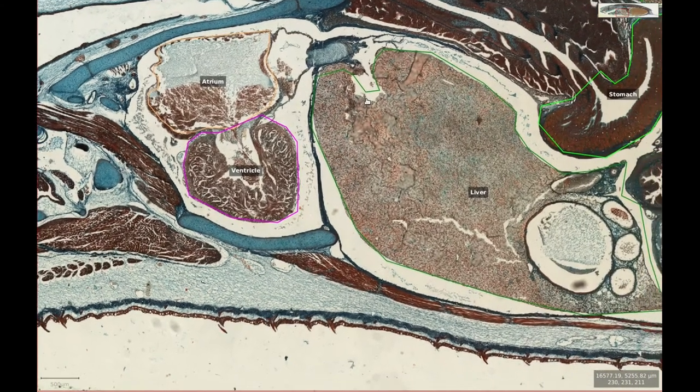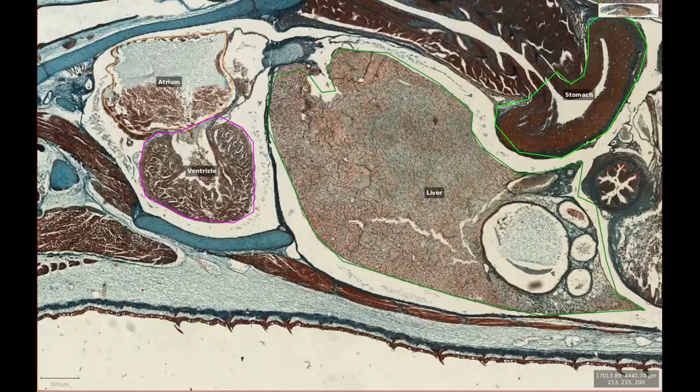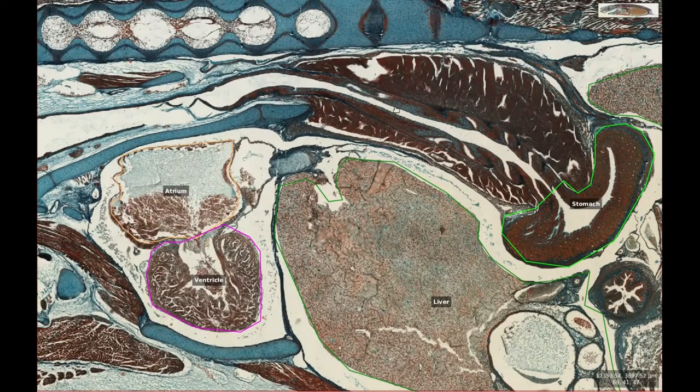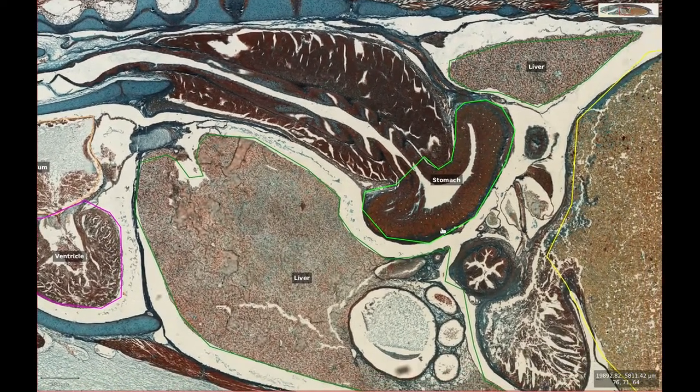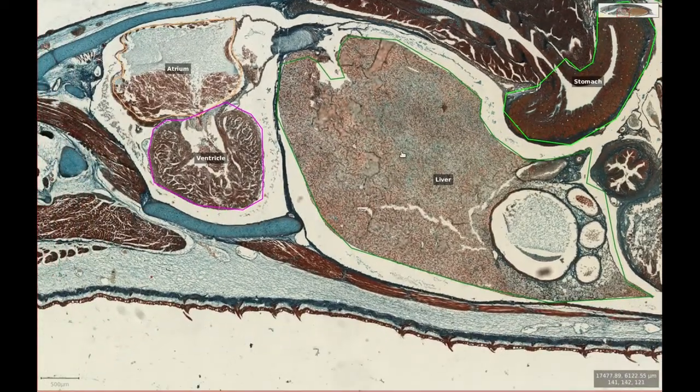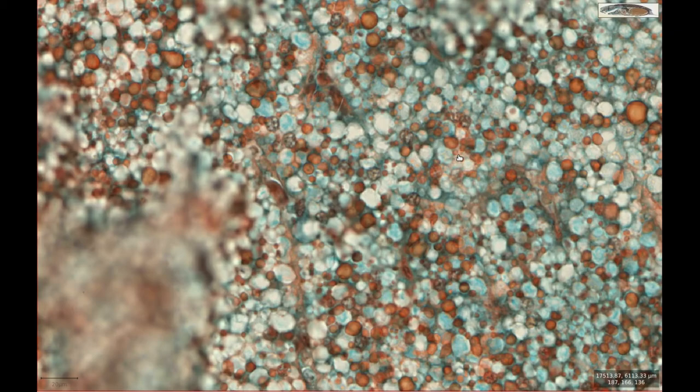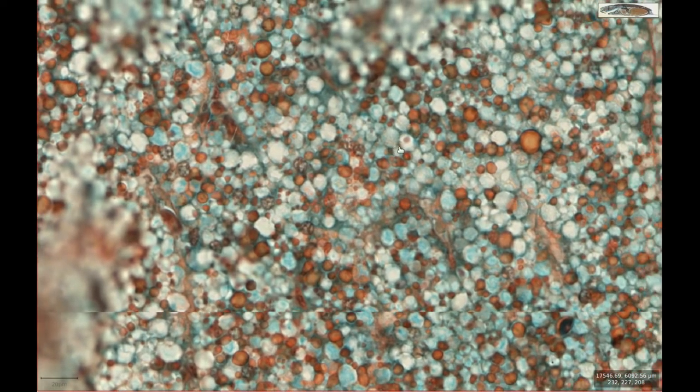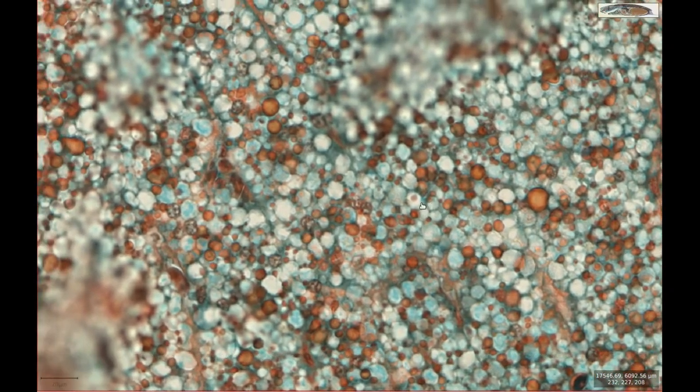Looking caudally towards the coelomic cavity, we can see the esophagus entering the stomach. Below and above the stomach are two portions of an organ composed of large cells with clear vacuoles, giving it a bubbly appearance. This is the liver. The cellular detail isn't brilliant in this section but improves in others.